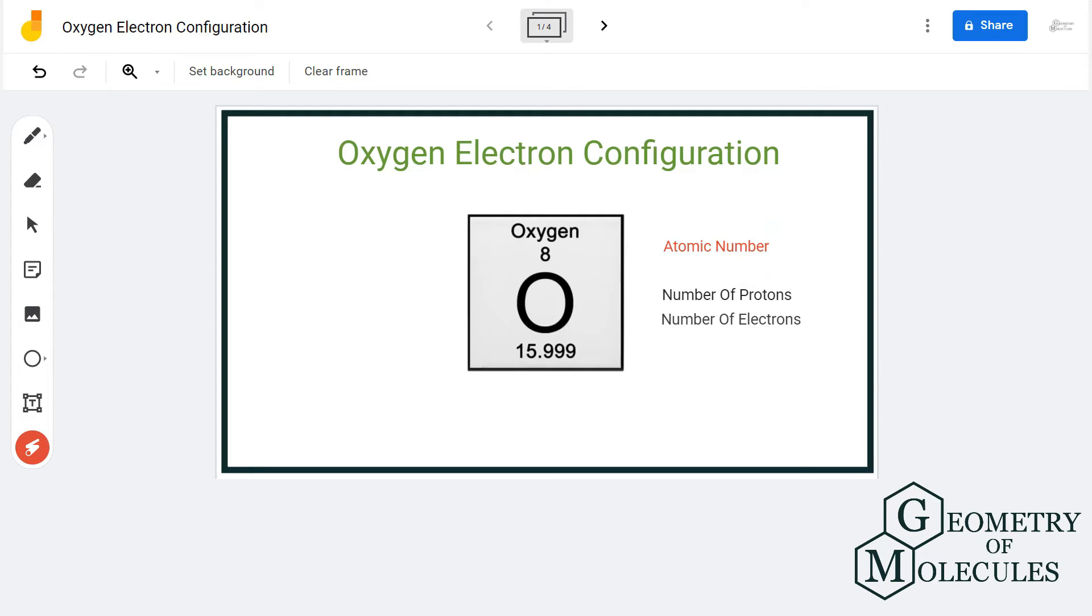So when we look at the periodic table, we can see that oxygen has an atomic number of 8, which means it has a total of 8 protons as well as 8 electrons.